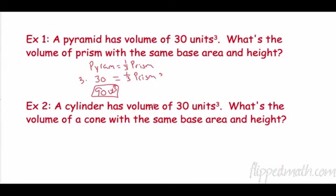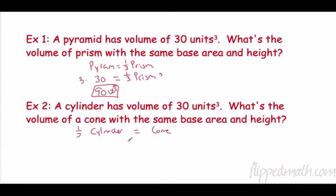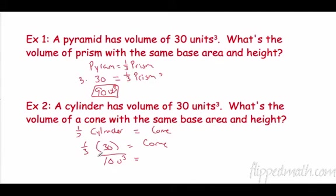A cylinder has a volume of 30 units cubed — what's the volume of a cone with the same base and height? A cylinder and a cone have the relationship: one-third of a cylinder equals the cone. So one-third of 30 gives us the volume of the cone — one-third of 30 is 10 units cubed.